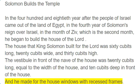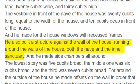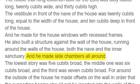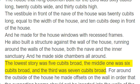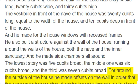And he made for the house windows with recessed frames. He also built a structure against the wall of the house, running around the walls of the house, both the nave and the inner sanctuary. And he made side chambers all around. The lowest story was 5 cubits broad, the middle one was 6 cubits broad, and the third was 7 cubits broad. For around the outside of the house he made offsets on the wall in order that the supporting beams should not be inserted into the walls of the house.